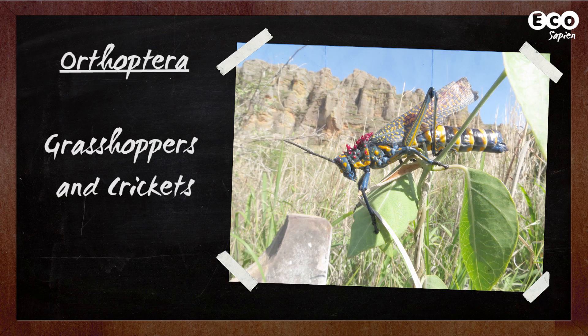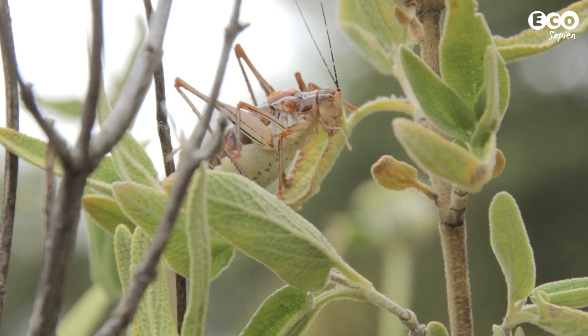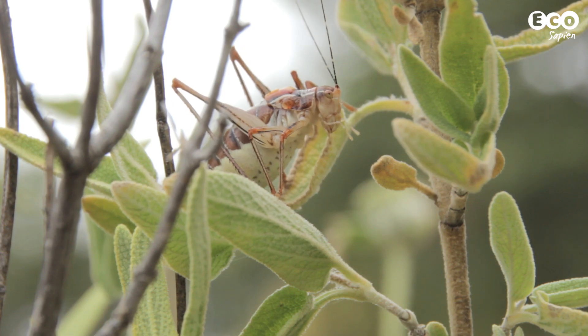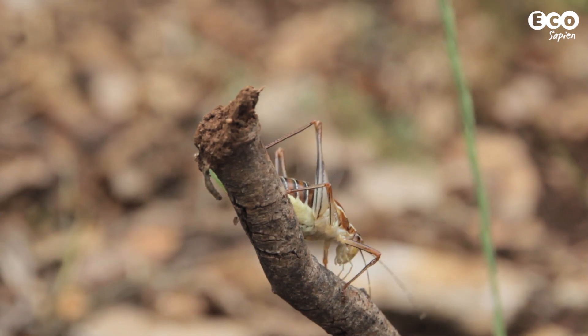Orthoptera: grasshoppers and crickets, famous for their ability to make noises through stridulation — the process of rubbing parts of their body together.